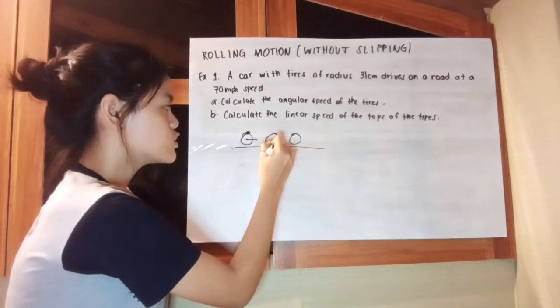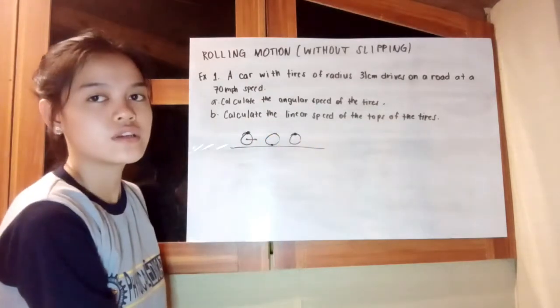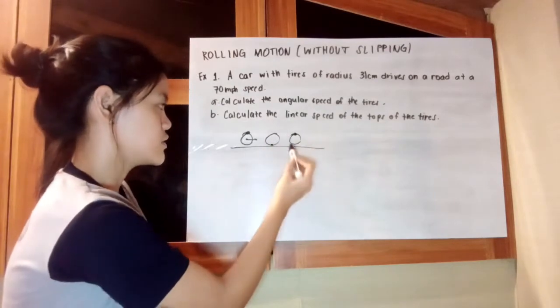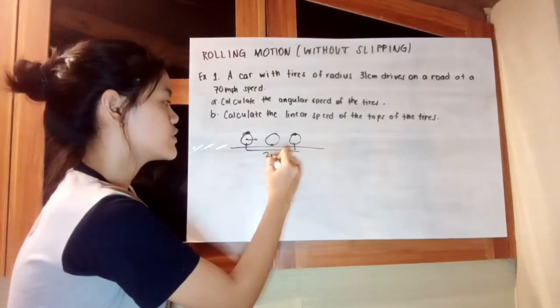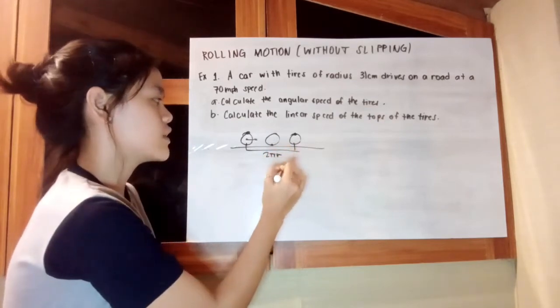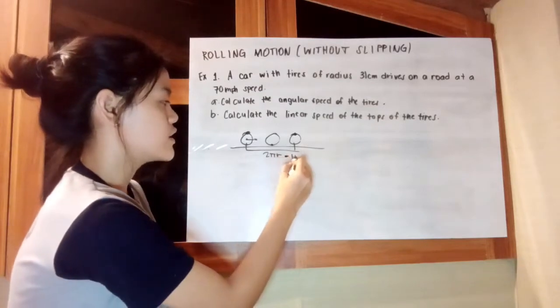This point here gets to be in this point and then back at this point at the third figure. That means this distance from here to here is equivalent to 2πr, which is equal to 1 revolution.